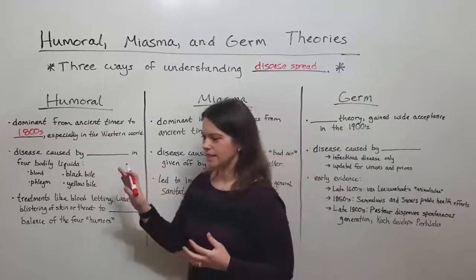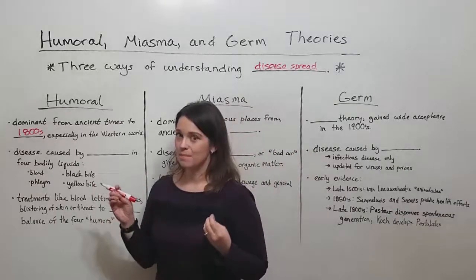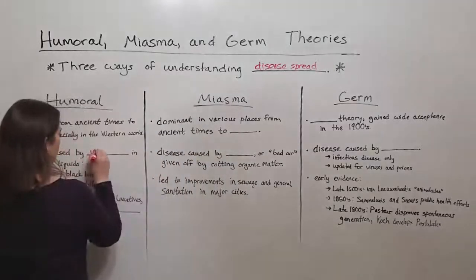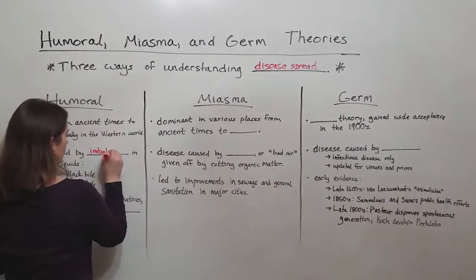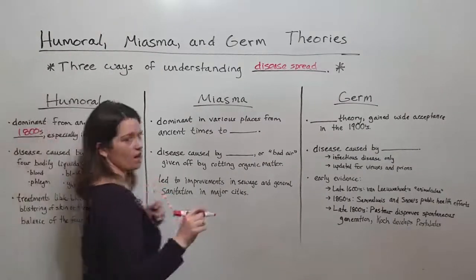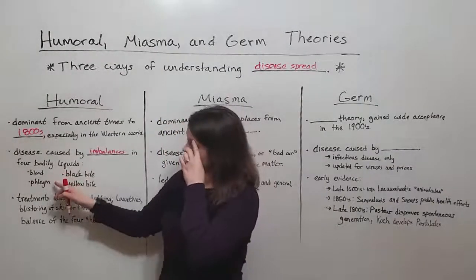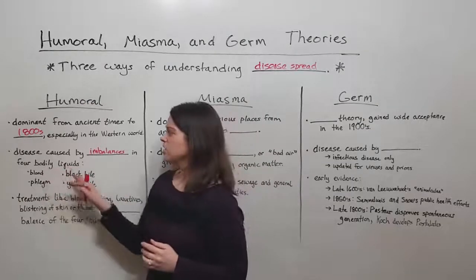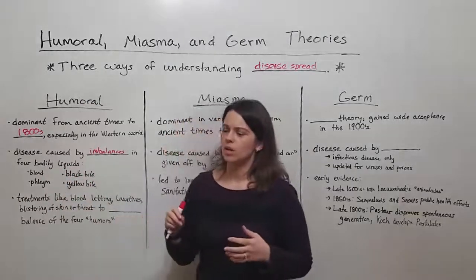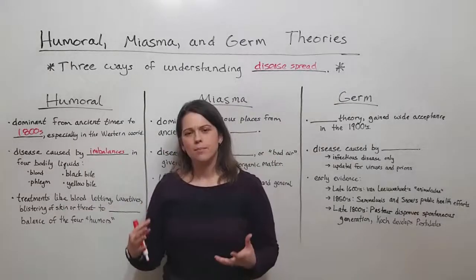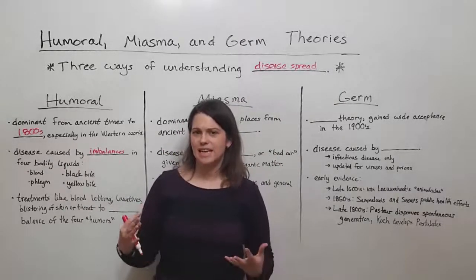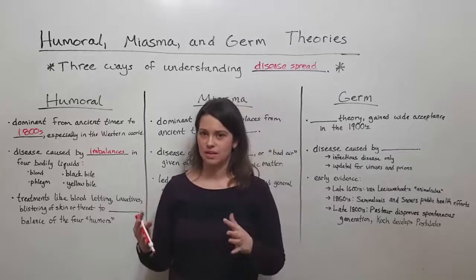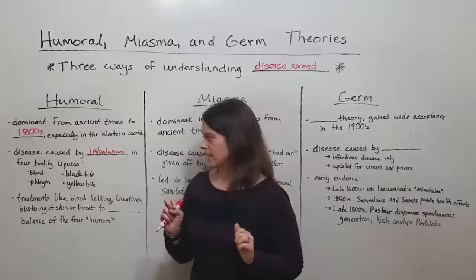They thought that disease was caused by imbalances in four different bodily liquids: blood, phlegm, black bile, and yellow bile. Each of these liquids was associated with different temperaments, with different seasons. But ultimately it was thought that to have good health they had to be balanced in a particular way.